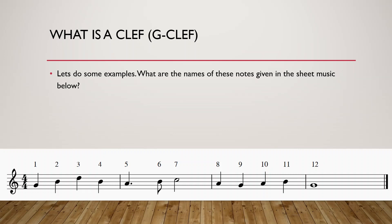So let's do an example. What are the names of the notes given in the sheet music below? So let's take a look. Always look at the clef first. So we are in G clef. And what does a G clef mean? Well it means that the second line from the bottom is a G. So the first note already is a G.